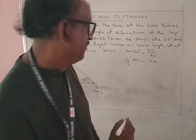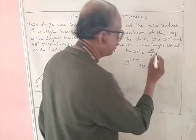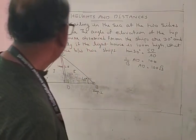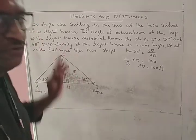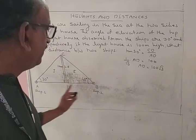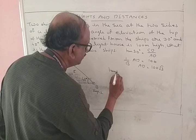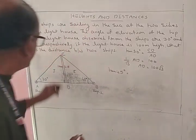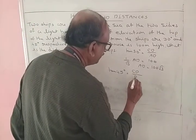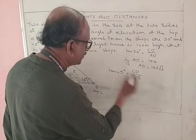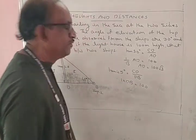Then cross multiply. CD is equal to AD multiplied by tan 30. CD is the height, 100. So AD is equal to 100 divided by tan 30, which equals 100 root 3. For the second triangle, tan 45 equals 1, so cross multiplication gives 1 into DB equals CD, which is 100. Therefore DB equals 100.